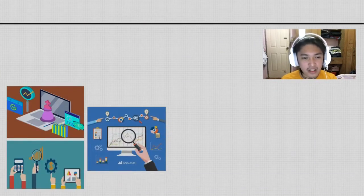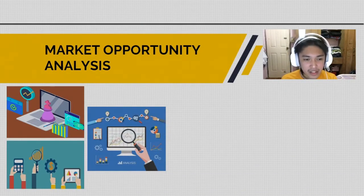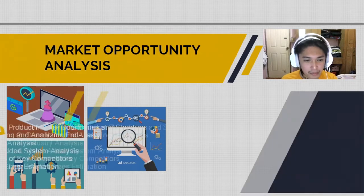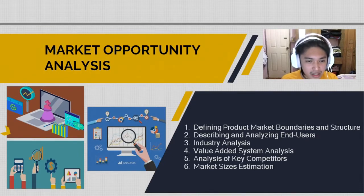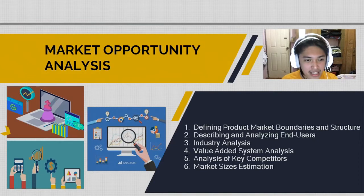Next up is market opportunity analysis. The majority of strategic decisions made by a small business can be done through identifying and analyzing your product. This is an approach that can be done in a five-step process: Number one, defining product market boundaries and structure. Number two, describing and analyzing end users. Number three, industry analysis. Fourth step, value-added system analysis. Fifth step, analysis of key competitors. And lastly, market sizes estimation.